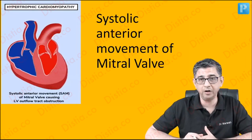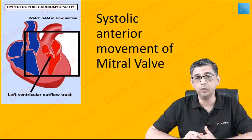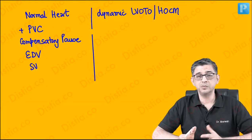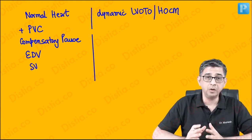Now let's look at how all this makes sense for the Brockenbrough-Braunwald-Morrow sign. In a normal heart, every time there is a premature ventricular contraction it will always be followed by a compensatory pause, because the heart would like to reset its rhythm and get back to normal sinus rhythm. This compensatory pause is like a blessing in disguise, allowing the heart to fill with blood.